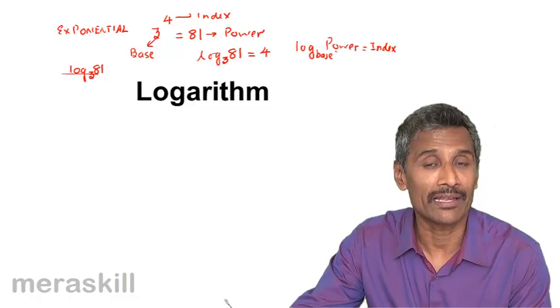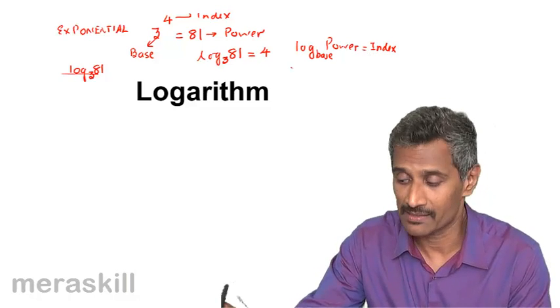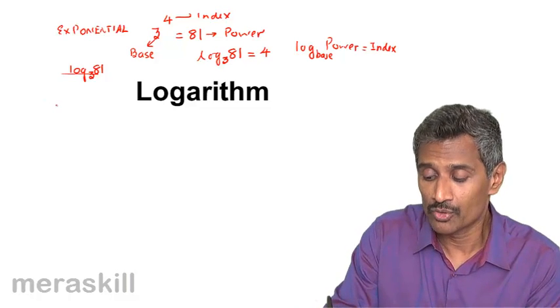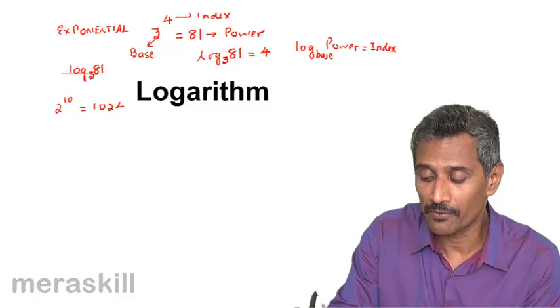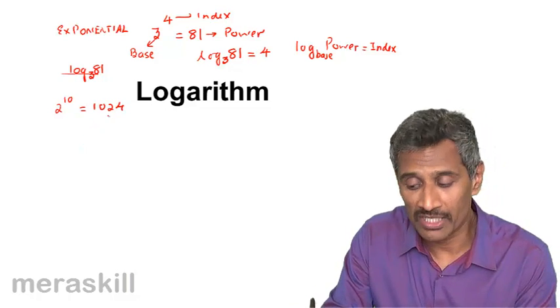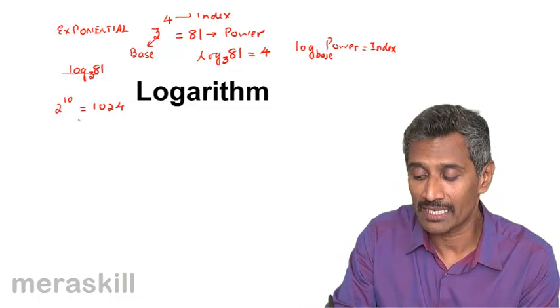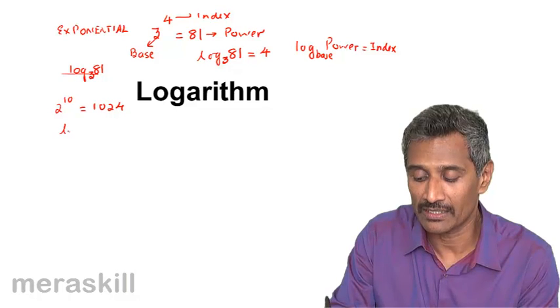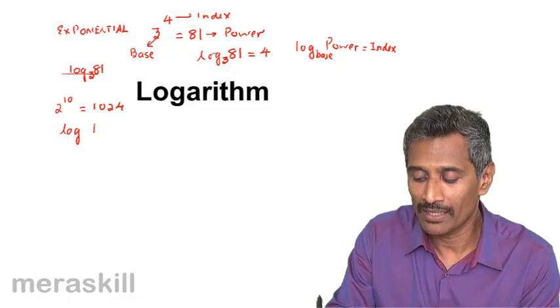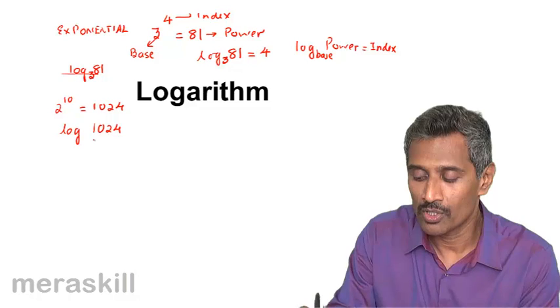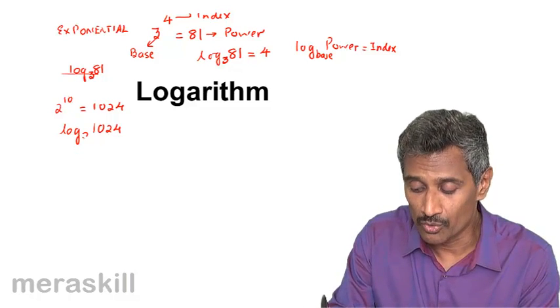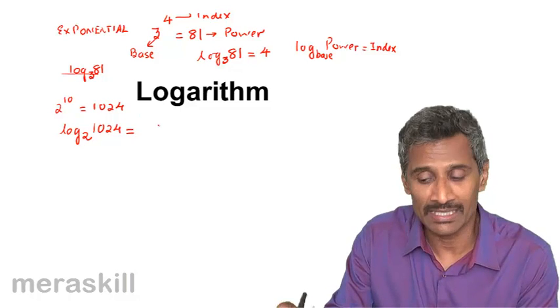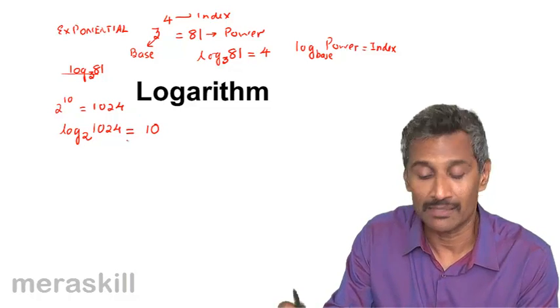Suppose you have 2 raised to 10 is 1024. This is the exponential form. In logarithmic form, we write it as log₂1024. The base remains the same, and the result is the index, which is 10.